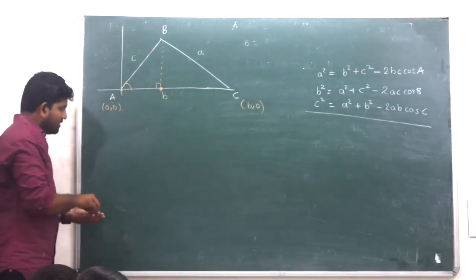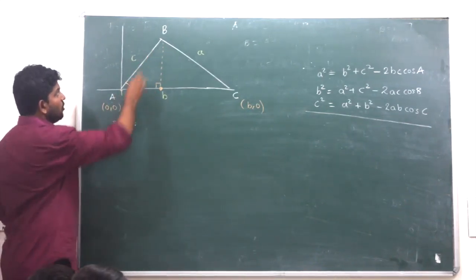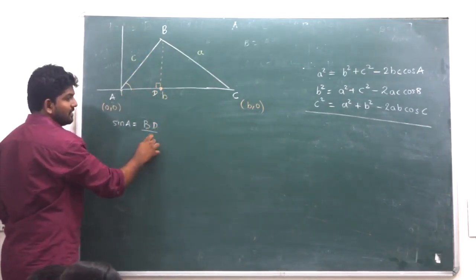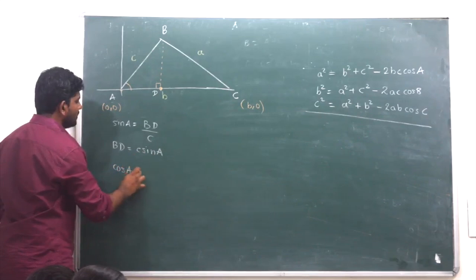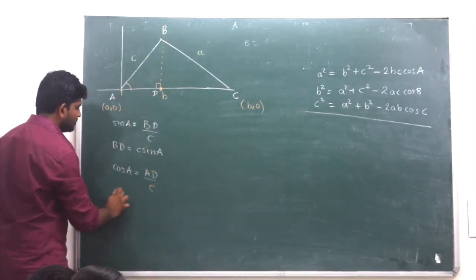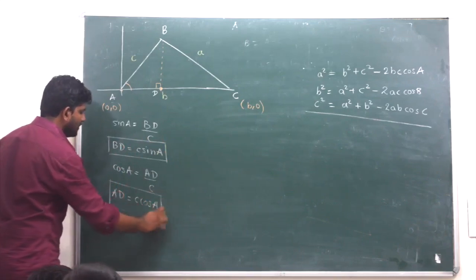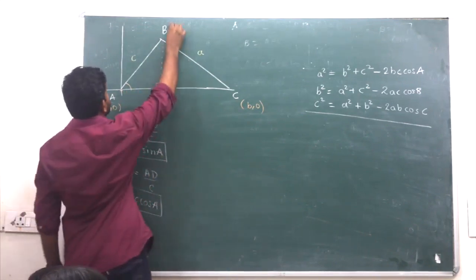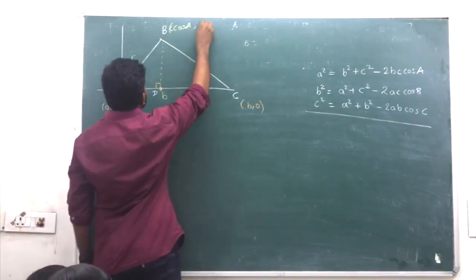This side is where? cos theta and sin theta. sin A equal to opposite BD upon hypotenuse c, therefore BD equal to c sin A. Now find cos A. cos A equal to adjacent AD upon hypotenuse, so AD equal to c cos A. Therefore, the coordinates of D are c cos A comma c sin A.